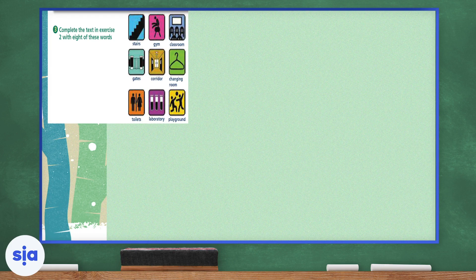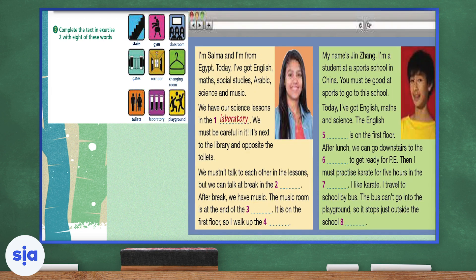In exercise three, you're going to complete the text with eight of these words. You're going to reread the text and fill in the blanks with the words on the left-hand side. The words are: stairs, gym, classroom, gates, corridor, changing room, toilets, laboratory, and playground.